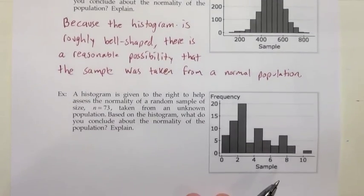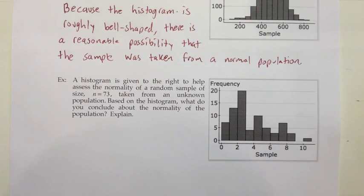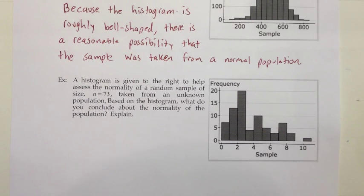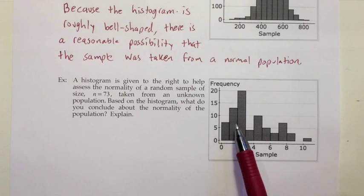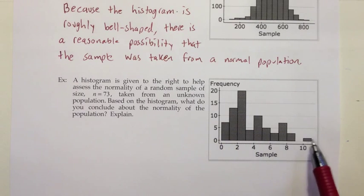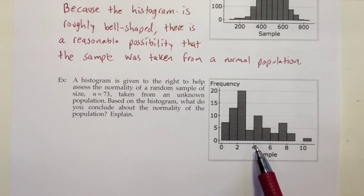As opposed to our next example — let's go ahead and look at that — where we have a histogram given to assess the normality for a random sample of size 73, also taken from an unknown population. Based on the histogram, they want us to decide what we conclude about the normality of the population. This time, when I look at the sample, it doesn't look really bell-shaped at all. My peak is two bars from the left, I have several bars out to the right tail, so there seems to be a big imbalance there. That imbalance seems like it's probably too big to just be the result of random variation.